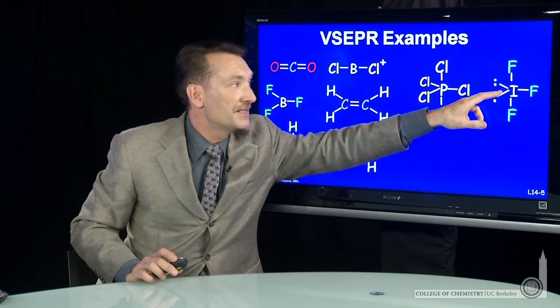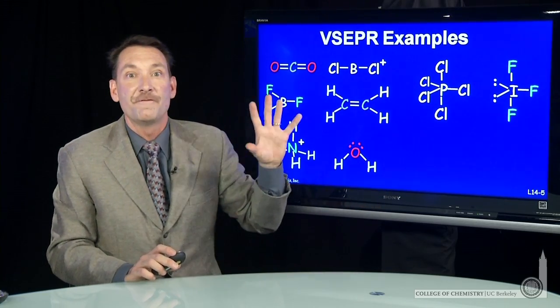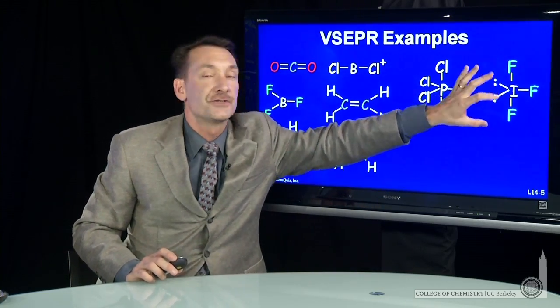The 90 degree lone pair bond pair arrangements we want to minimize in our structures. So this is a better arrangement of five things, two lone pairs, three atoms.